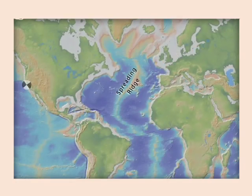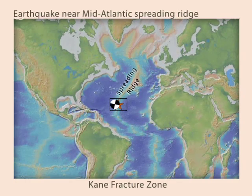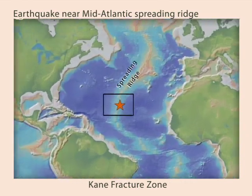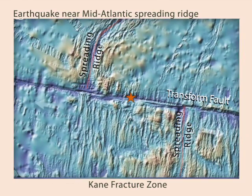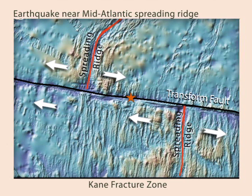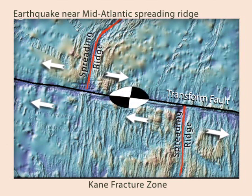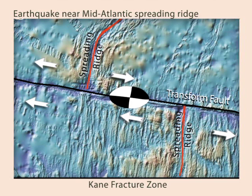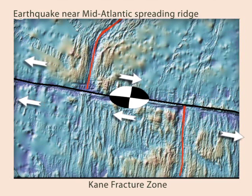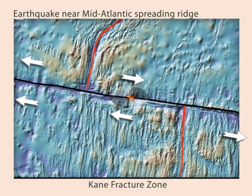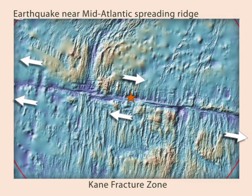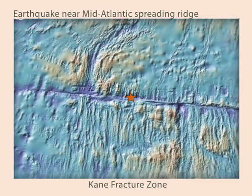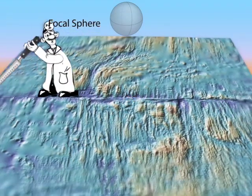Now let's consider a right lateral strike-slip earthquake on the Kane Fracture Zone in the Atlantic. This earthquake will produce compression in the northeast and southwest quadrants, and dilatation in the northwest and southeast quadrants. Since there are no nearby seismometers, the P wave first arrival patterns are observed at distant stations. Seismic energy travels away from the earthquake in all directions, so we need to consider the three-dimensional geometry of the ray paths.